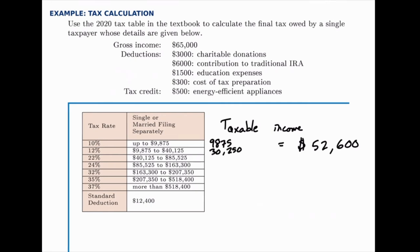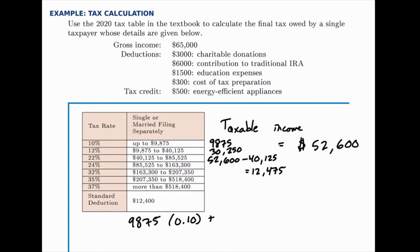And in the third bucket, we'll have everything from $40,125 up to $52,600. That works out to $12,475, which means we're going to take 10% of $9,875, 12% of $30,250, and 22% of $12,475.